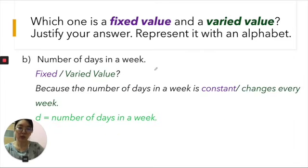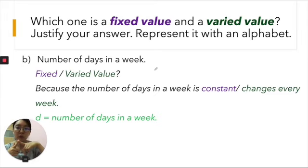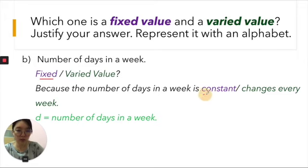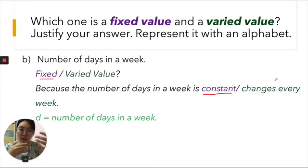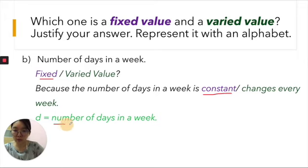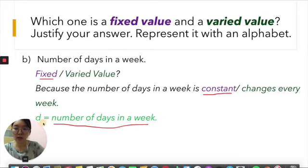Next: the number of days in a week. This week there are seven days. Next week there are seven days. Every week it is seven days. So it is a fixed value because the number of days in a week is constant — it doesn't change. So the number of days in a week is an unknown number and I can represent it with D — a small capital letter D.